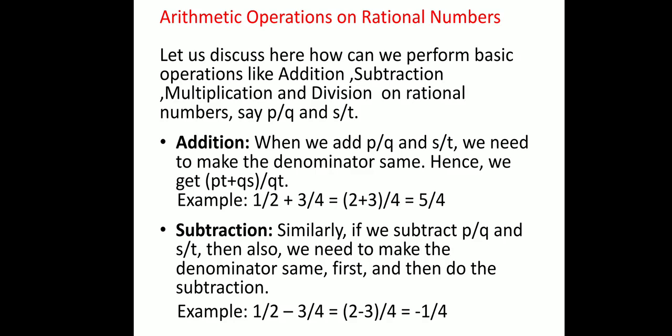The second operation is subtraction. Just as with addition, we first make the denominators the same and then subtract the numerators. For example, subtracting 1/2 from 3/4: the common denominator is 4, giving us (2 − 3) / 4 = −1/4.